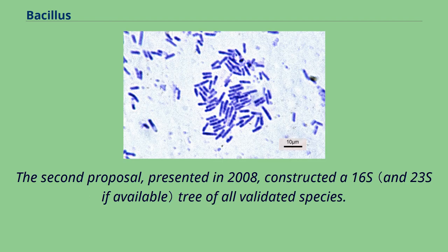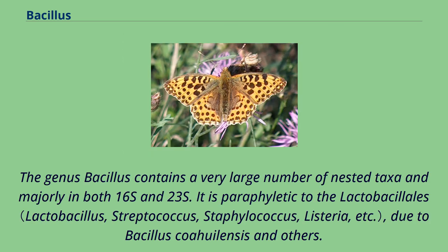The second proposal, presented in 2008, constructed a 16S tree of all validated species. The genus Bacillus contains a very large number of nested taxa in both 16S and 23S, and is paraphyletic to the Lactobacillales, due to Bacillus coohii and others.